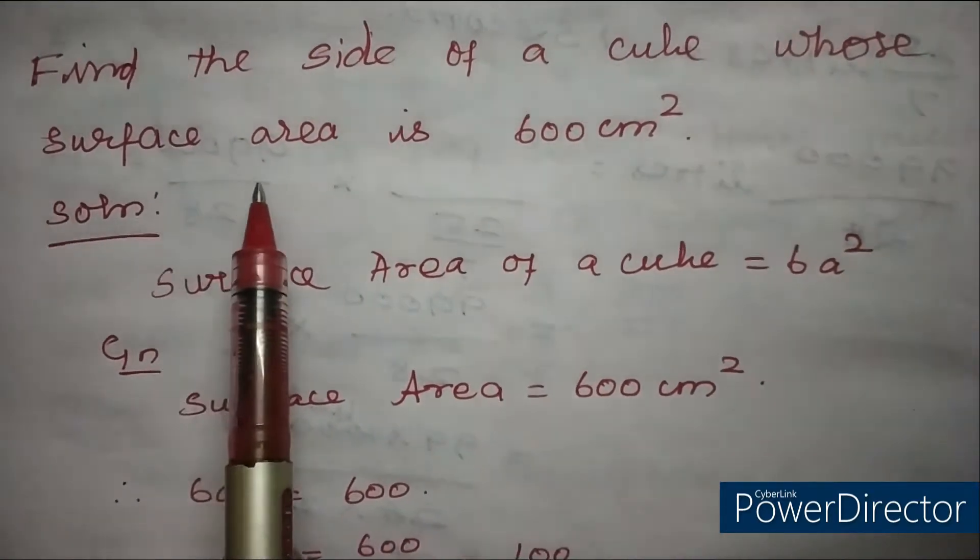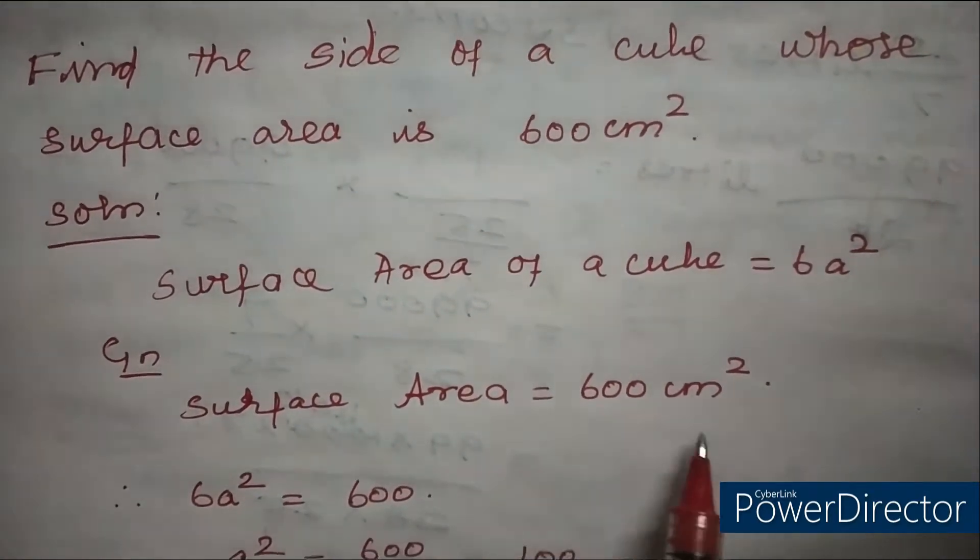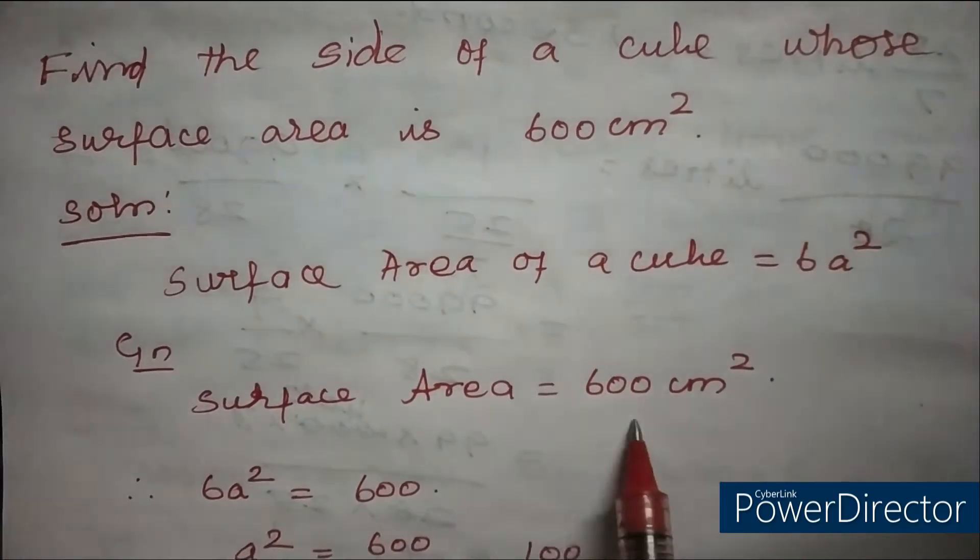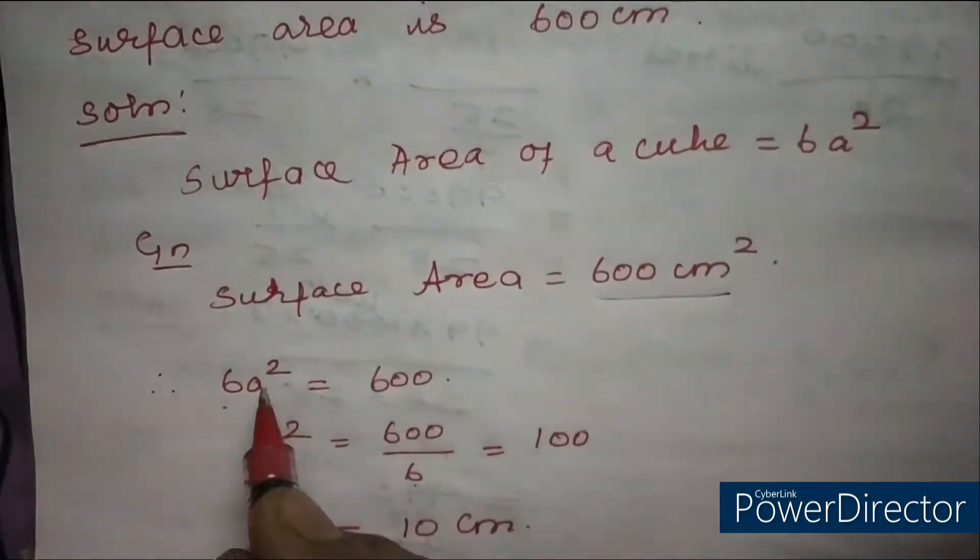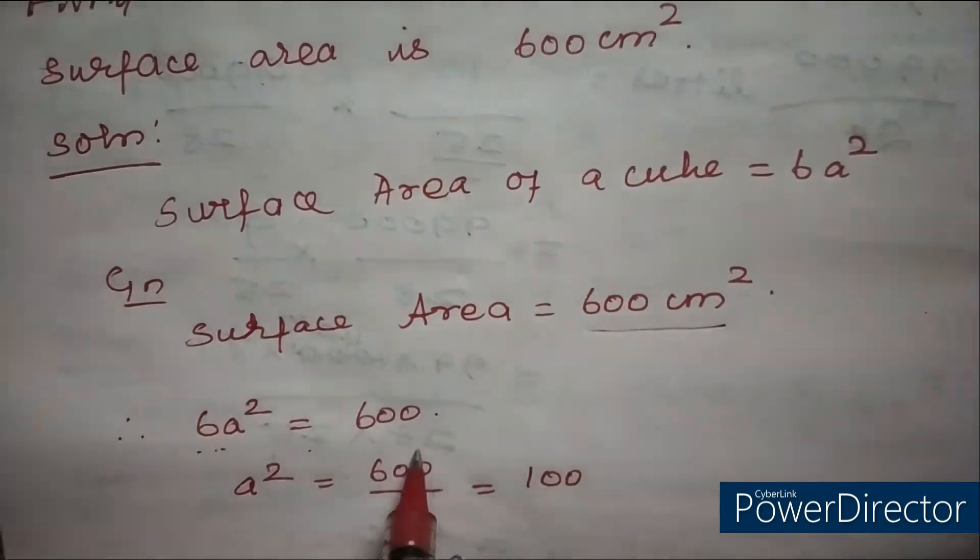What is given is surface area is 600 cm². Therefore, using the formula, 6a² equals 600.